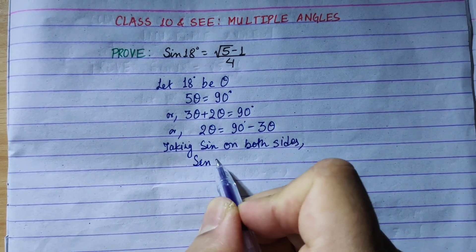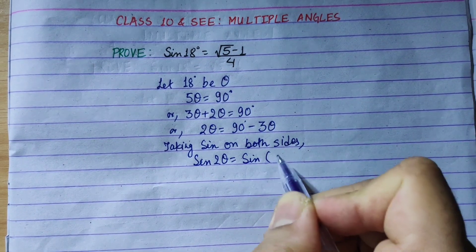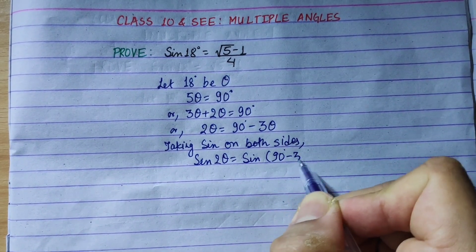Sin 2 theta is equal to sin bracket 90 minus 3 theta.